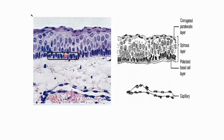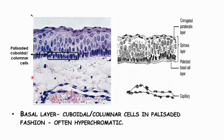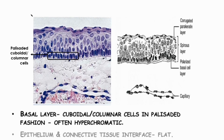There is a basal layer that consists of cuboidal or columnar cells arranged in a palisaded fashion. These cells look like tombstones or a picket fence in shape and are often hyperchromatic.